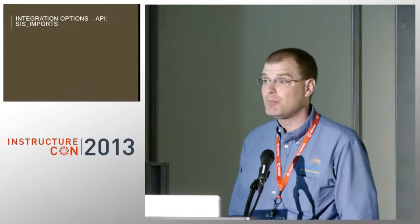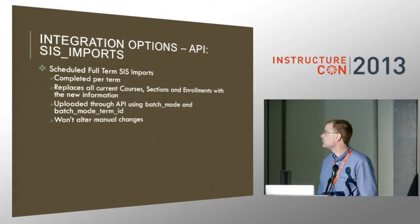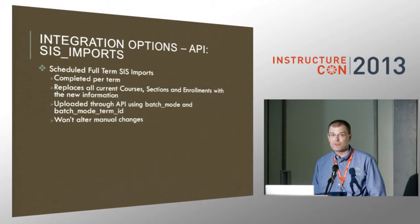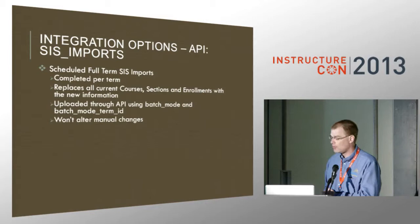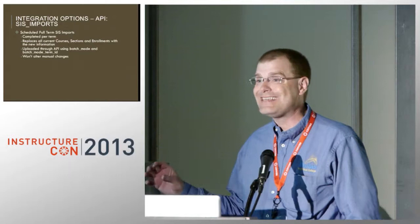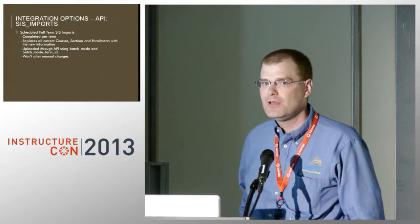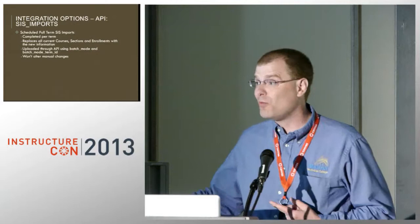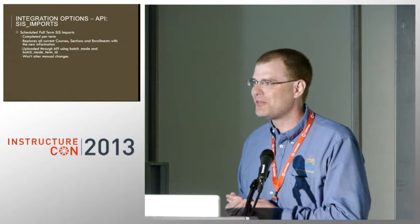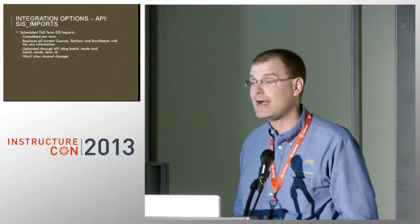Within the SIS imports portion of the API, you have two different options. The first is a full batch for your whole term — this is specific to a term you've created in Canvas. If I flag this as a full batch upload, I have to include the term ID for which I want the files to apply. If I upload an enrollments file but all the courses were in a different term, all my enrollments for the intended term will disappear, and none of the enrollments for the other term will happen because they're limited to the term specified when you made the API call.